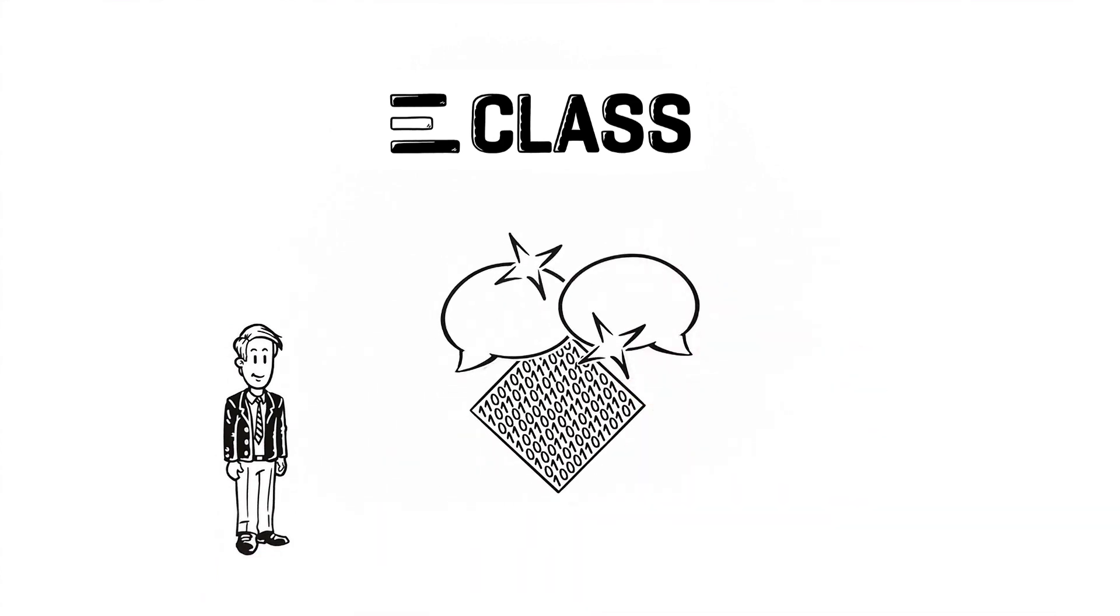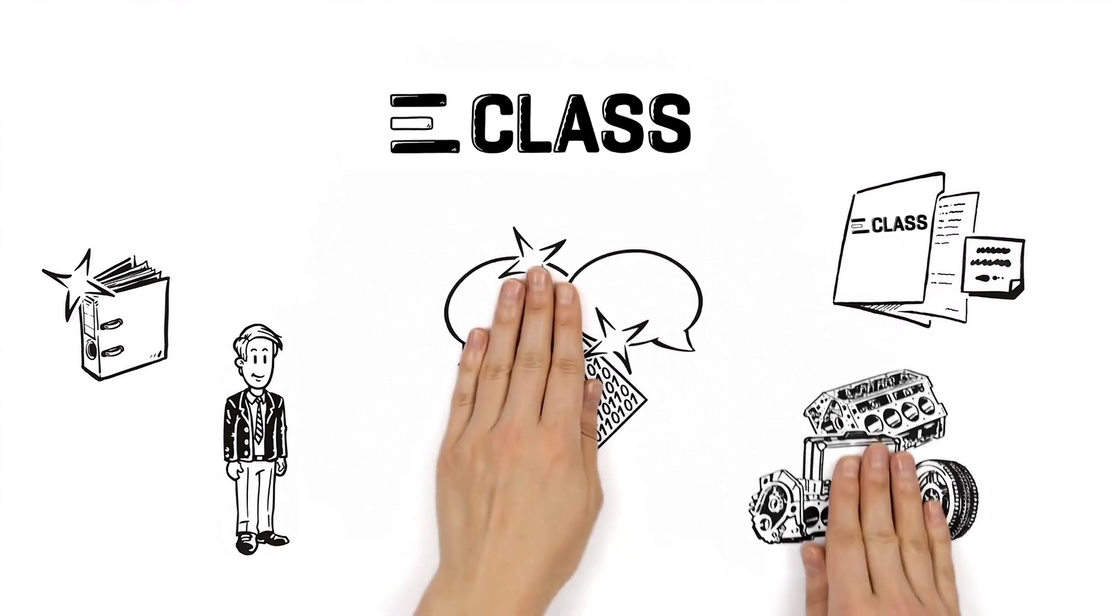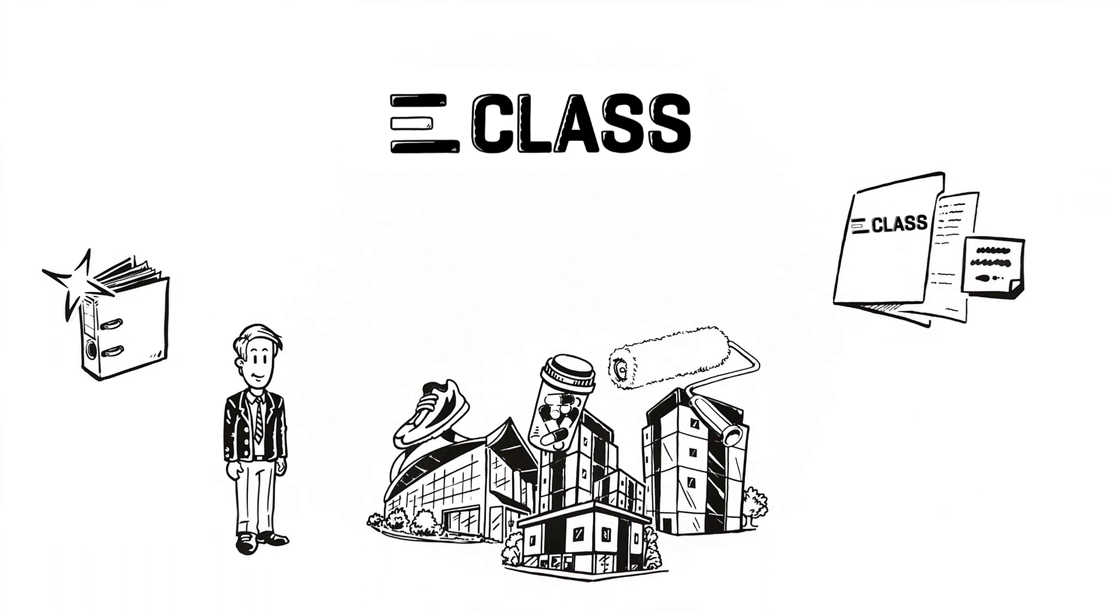This electronic cataloging system helps Paul not only with communication between companies, but also with internal auditing. The system offers 41,000 commodity classes, 17,000 different properties and 57,000 keywords for describing products. Everyone finds what they need there.